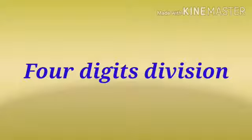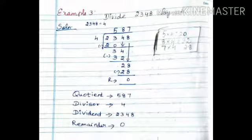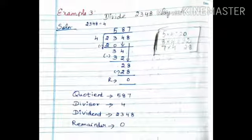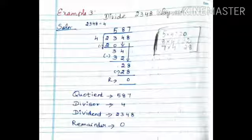First sum number. Example 3, page number 62. Divide 2348 by 4. First solution is 2348. It is the dividend value. Next 4. 4 is the divisor value. You write the 4 outside.